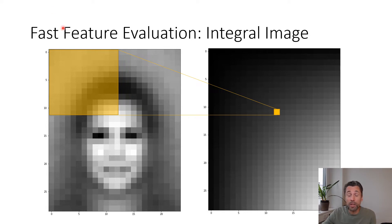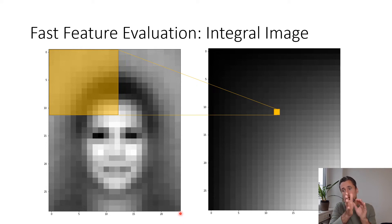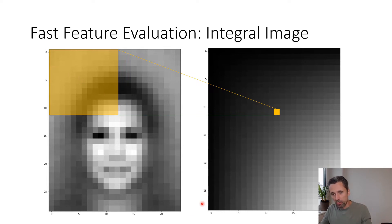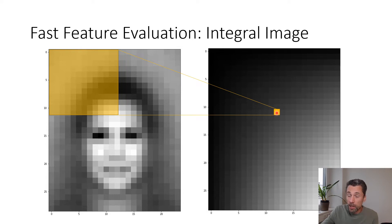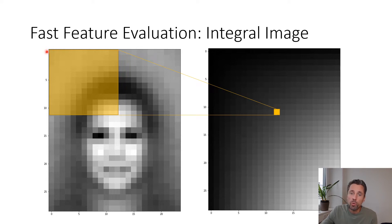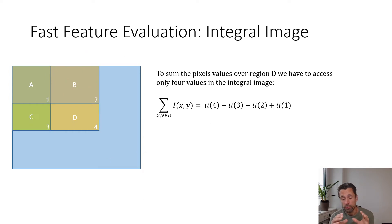We do that for 160,000 features for only one of those inputs — isn't that slow? Yes, it is slow, and we have to accelerate that. We do so with a thing called the integral image, which takes an image and computes the cumulative sum over the entire image from top-left to bottom-right. A given position in the integral image gives you the sum of all pixels from that position to the origin.